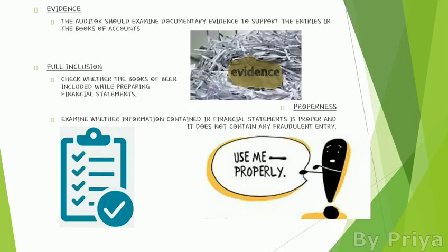For evidence, the auditor should examine documentary evidence to support the entries in the books of accounts. If a particular transaction is recorded in the journal or ledger, the auditor must check the invoice related to that transaction and ensure proper evidence exists to support it.